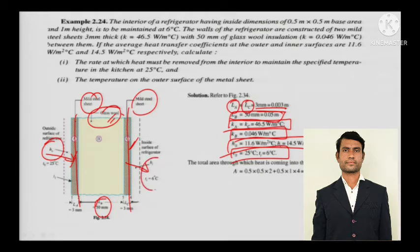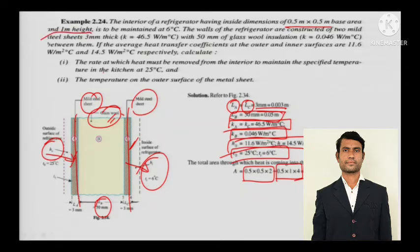And TI, the inside temperature of the refrigerator is 6 degrees Celsius. The total area through which heat is coming into the refrigerator is 2.5 meter square. This is 0.5 into 0.5 into 2, that is the base area. There is the front area and the base area.